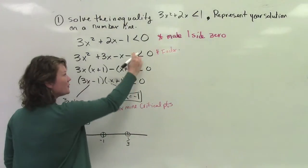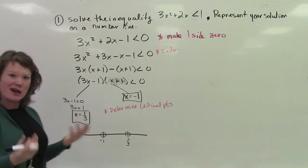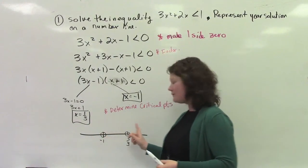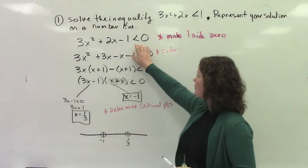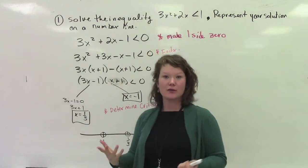If there was an equal sign here, then I could fill in the dots, but I don't. So now what I want to do is I want to pick test points to see whether or not the quadratic is positive or negative at those certain points.